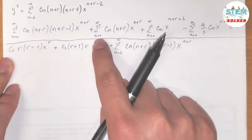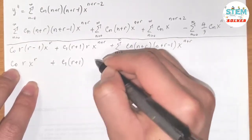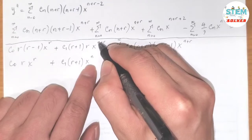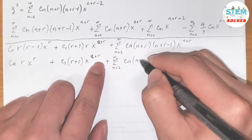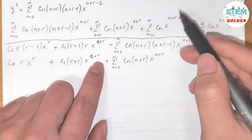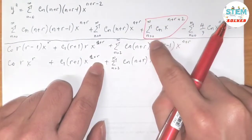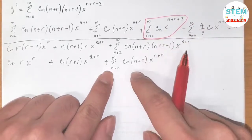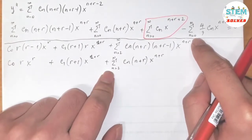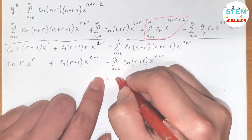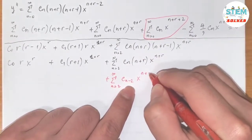For the second term, running out: c0·r x to the r, plus c1(r+1) x to the r+1, plus the power series from 2 to infinity of cn(n+r) x to the n+r. For the third term, which starts at x to the r+2, I rewrite the index starting from 2 to infinity with cn−2 x to the n+r.